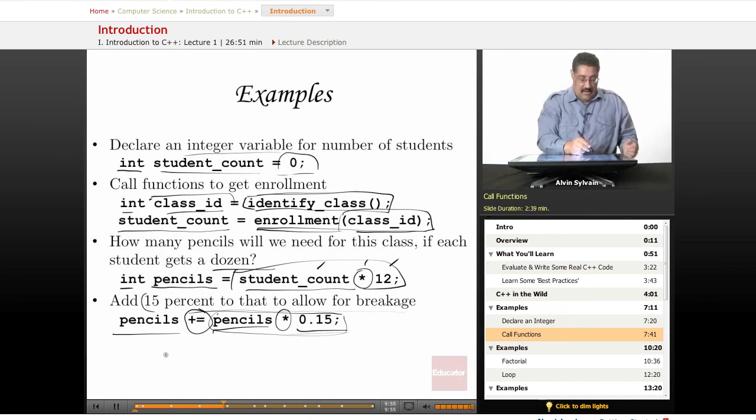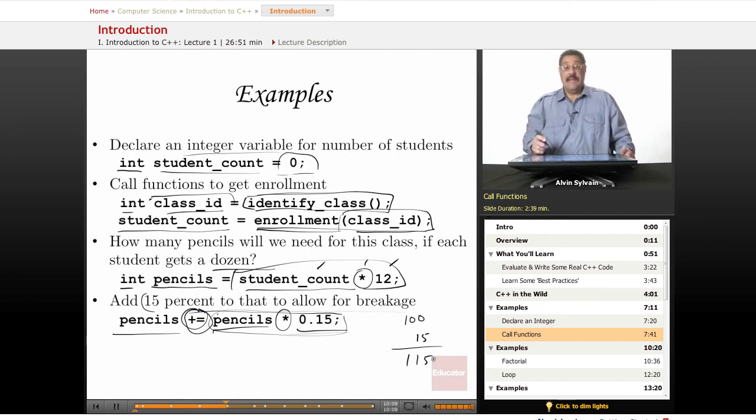And here's another operator, it's a different special type of assignment operator, which we will talk about later in the class, which takes the current value of pencils and adds to it this new expression and assigns that into pencils. So if pencils was like originally was say 100, we multiply that by 15%. That turns out to be 15. We add that to the 100 with the sign equals. And so pencils now is 115. So these are a few examples of doing some arithmetic expressions and some assignments in the variables and we do all kinds of wonderful things in the code here.